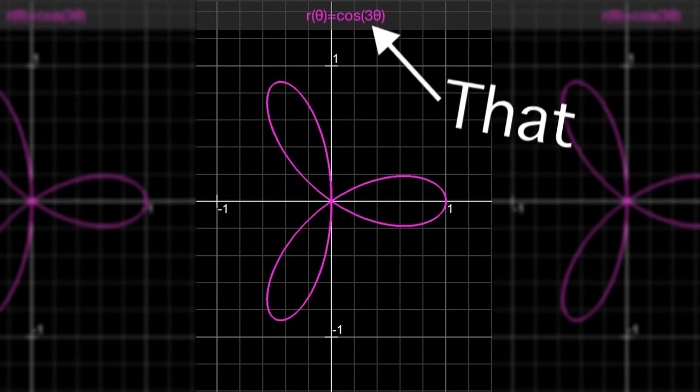Cosine 3 theta is next - that's also a polar rose, but this time it's odd. The argument's odd, so we're going to get that number of petals. And it's cosine, so it starts on the x.